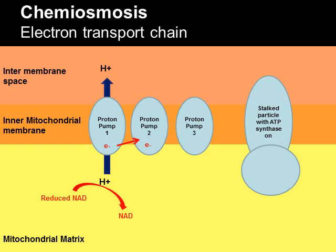The second proton pump picks up the electron with a little more energy and pumps more hydrogen ions into the inter-membrane space. That happens again — oxidation occurs, and the last proton pump is reduced, pumping more hydrogen ions through. These are redox reactions — reduction and oxidation happening together — as it always does in the electron transport chain.